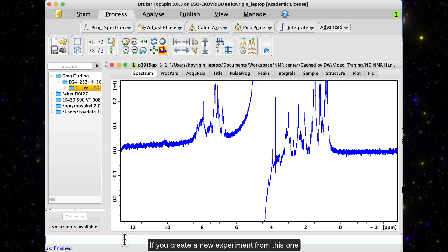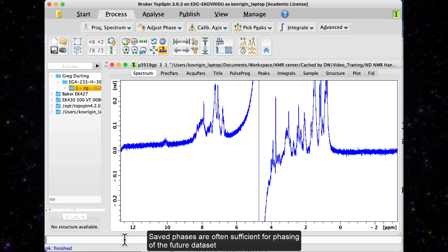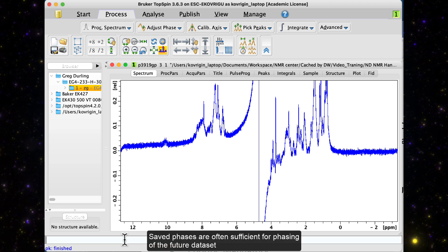If you create a new experiment from this one, it will inherit the phases. Saved phases are often sufficient for phasing of the future dataset.